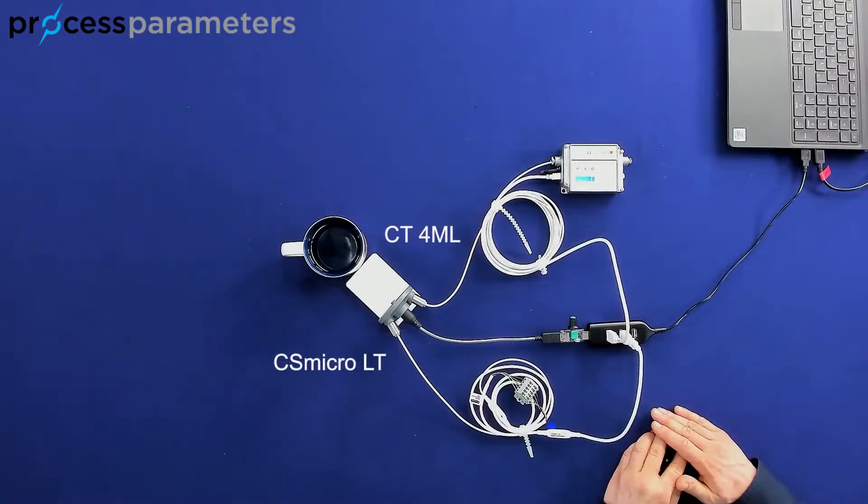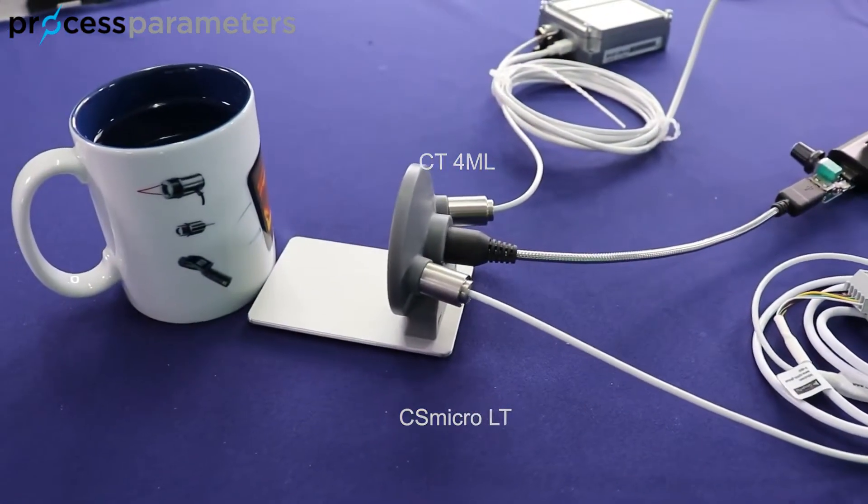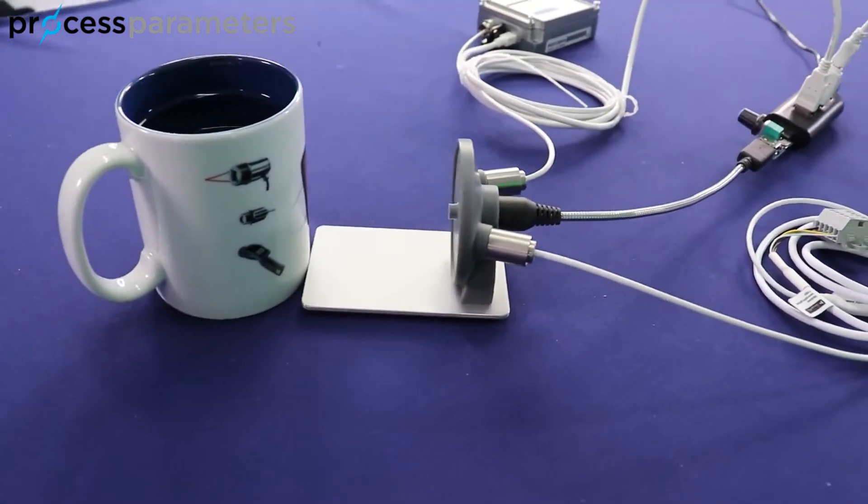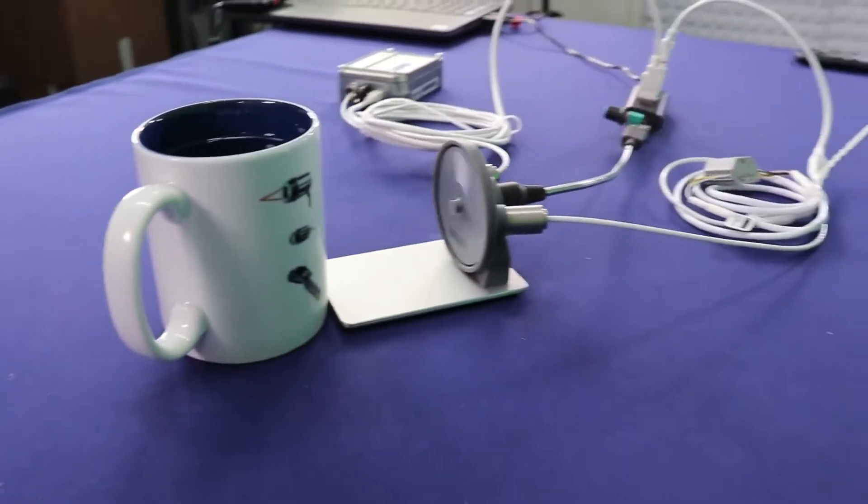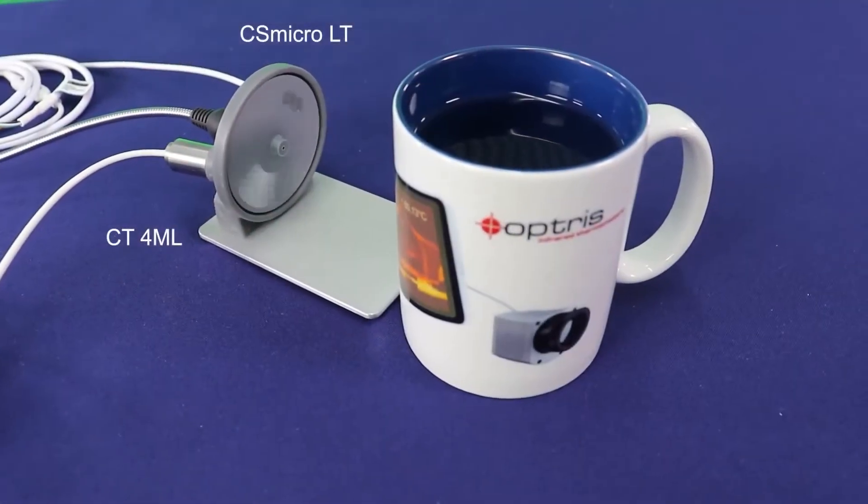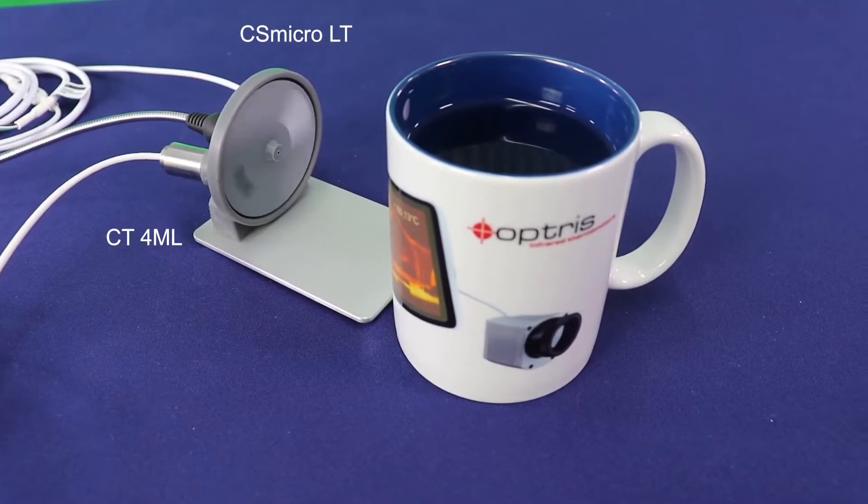Both sensors are checking the temperatures of a hot coffee cup located behind this rotating plate, looking through a passing hole which is integrated inside the plate and which passes each sensor head frequently with a defined speed.